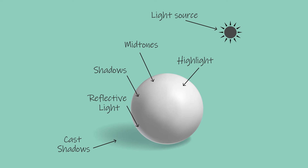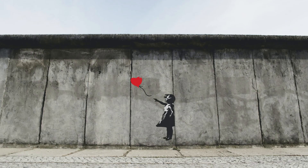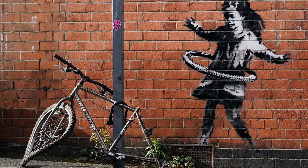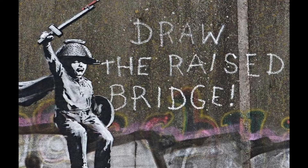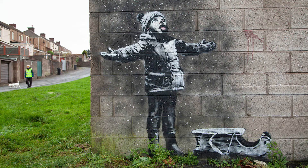To depict detailed forms in art, with all the little bumps and crevices, we use a wide value scale. But we can also create form with a very limited amount of values. Street artist Banksy creates form with high contrast, usually only using white, black and grey — just three values to create a sense of 3D. His figures appear 3D from a distance, even though the value range is extremely limited.